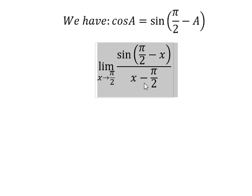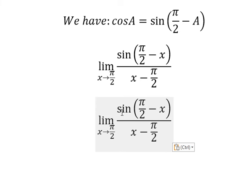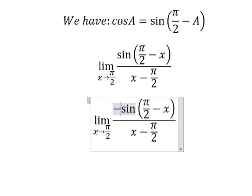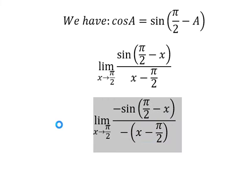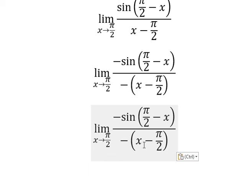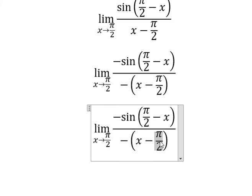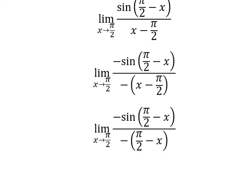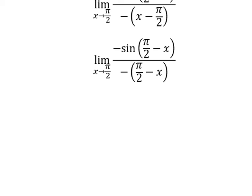Next, this one is about x minus π/2. Now we need to change this. We put negative on numerator and denominator, so this one we have π/2 minus x. Next we have the formula in here.